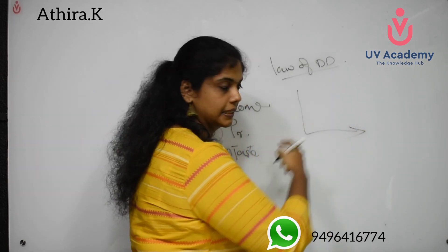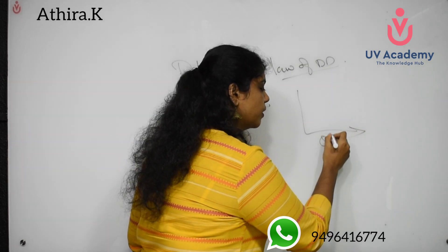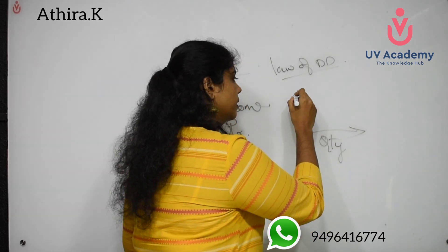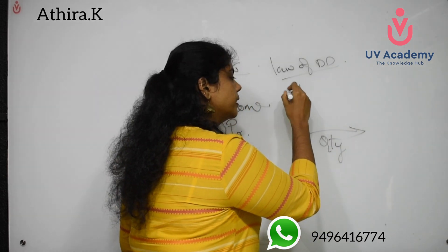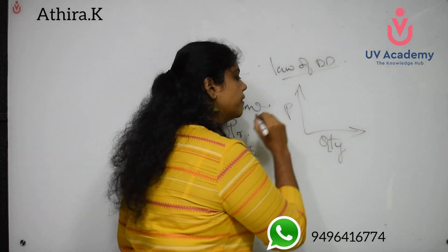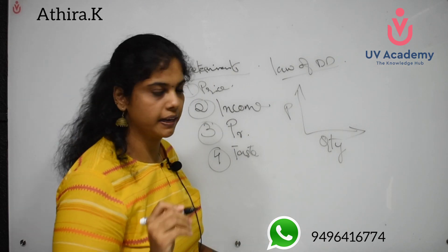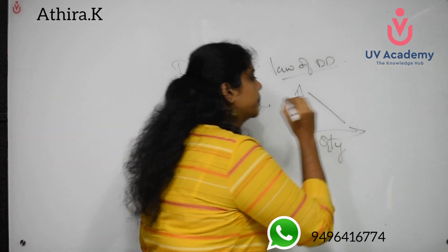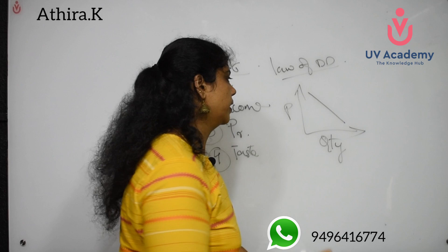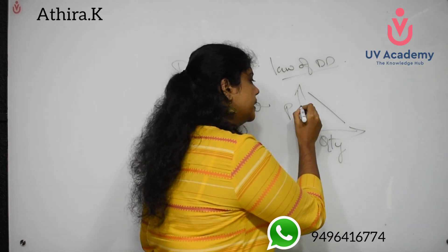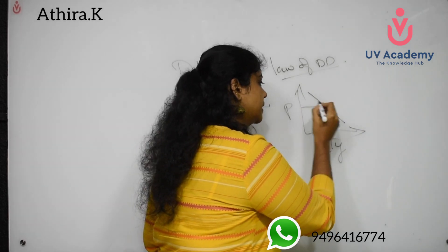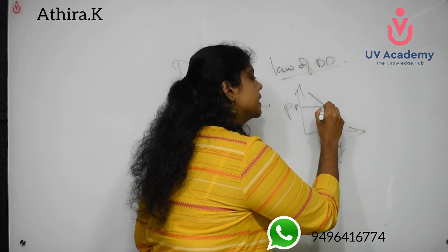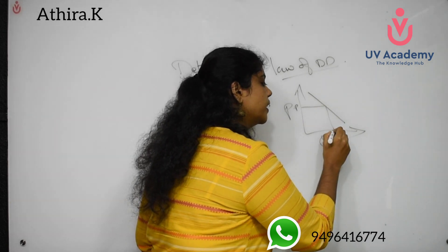Now let us graphically represent the Law of Demand. On the X-axis we have quantity, and on the Y-axis we have price. The demand curve slopes downward. The initial price is P and the initial quantity demanded is Q.